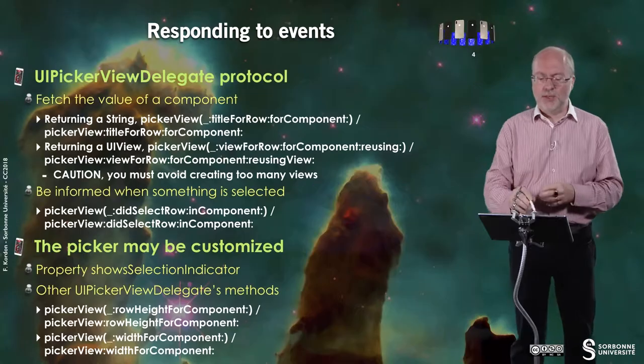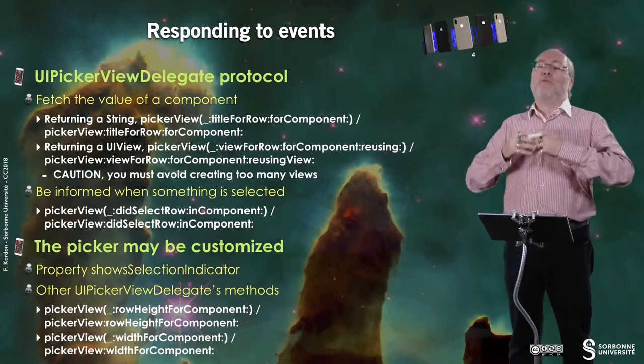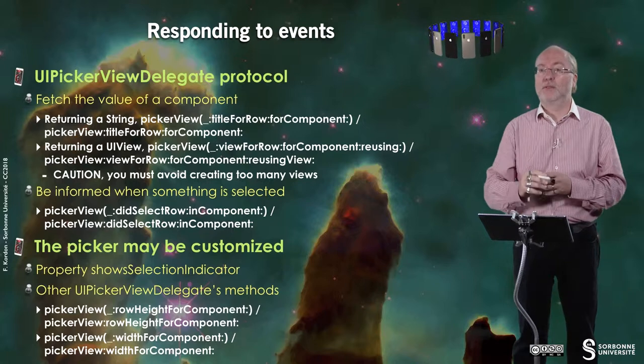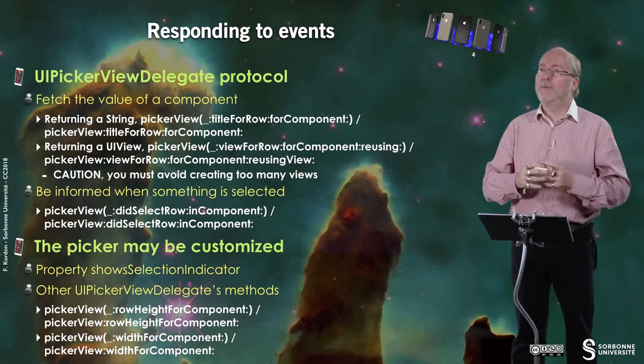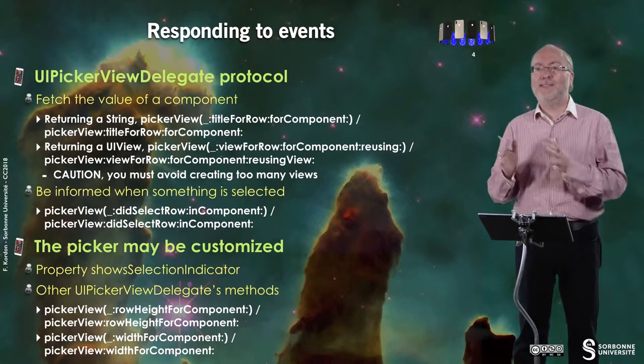To respond to events you use the second protocol, UI Picker View Delegate. The first important method to implement is `pickerView:titleForRow:forComponent:`, which returns a string and lets iOS handle the default appearance. If you want to customize it, there is a similar method that returns a UI View directly, allowing you to set custom backgrounds, images, or anything you want for each value.